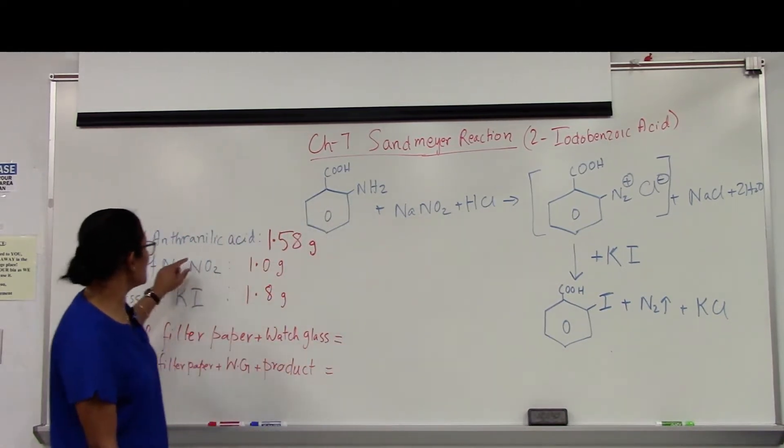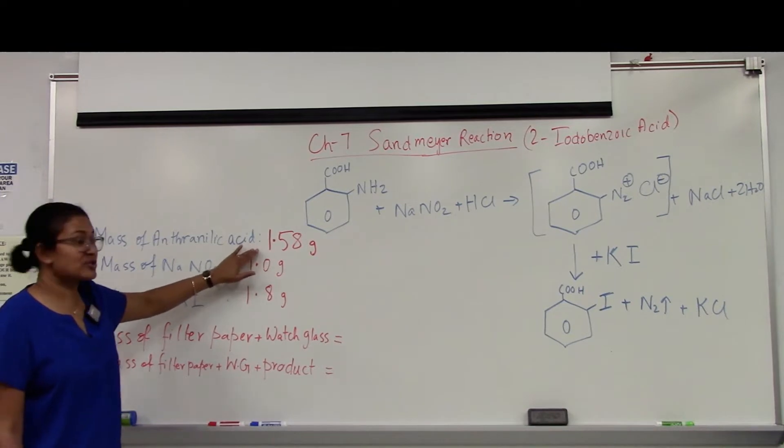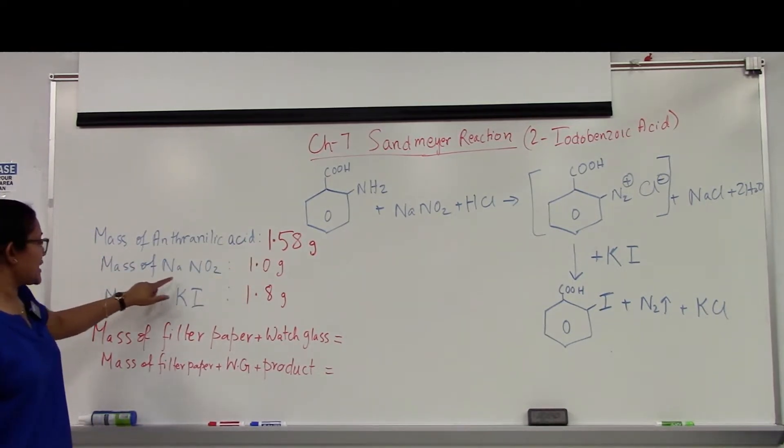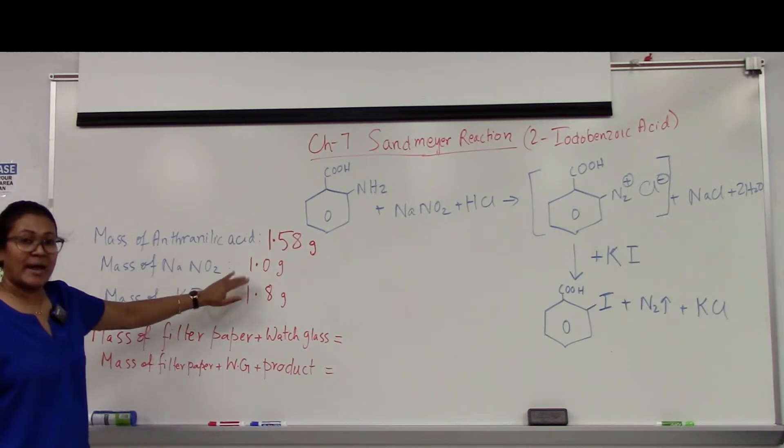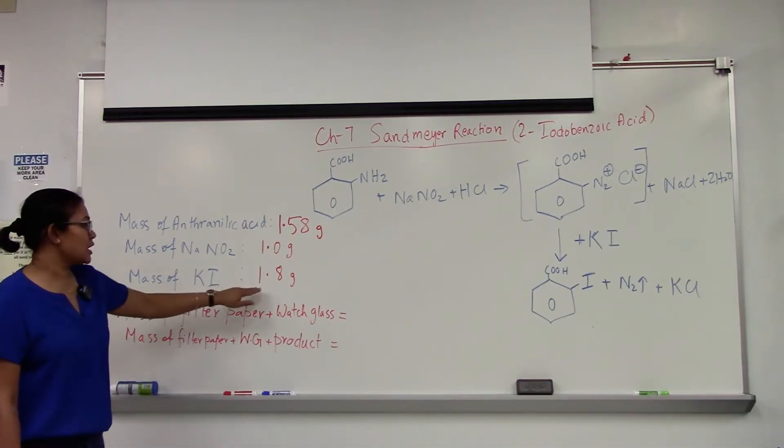I'm starting with 1.58 grams of anthranillic acid, 1.0 gram of sodium nitrite, and 1.8 grams of potassium iodide.